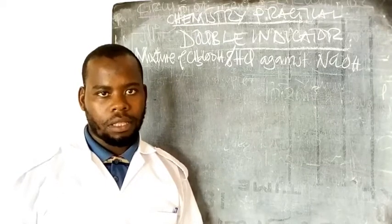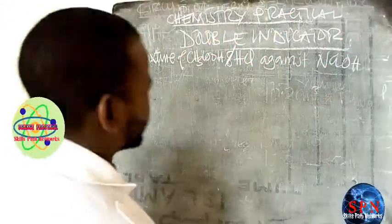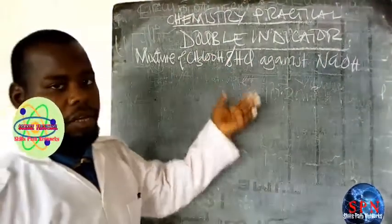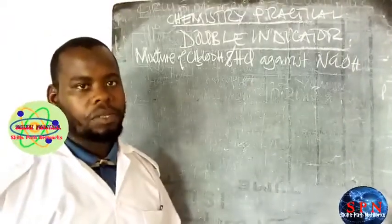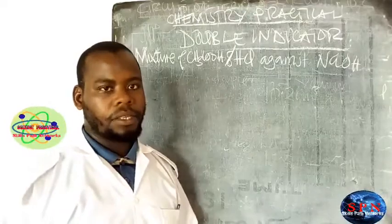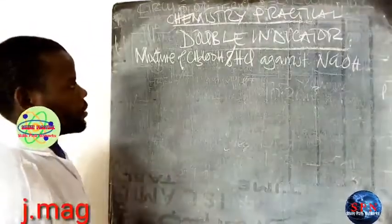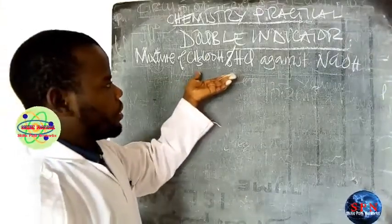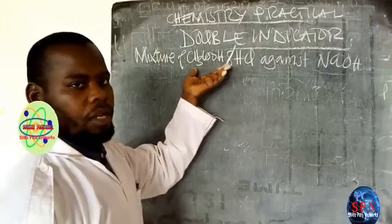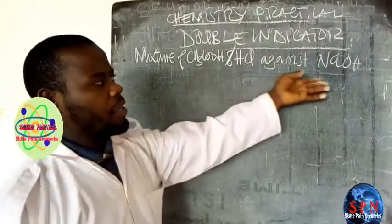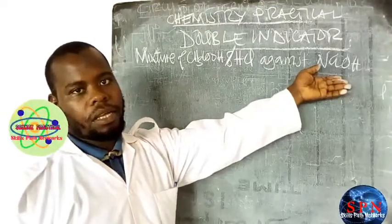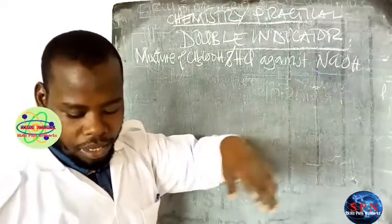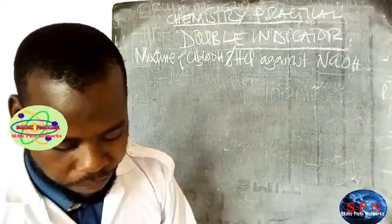We have a mixture of acids — acetic acid and hydrochloric acid — and we are going to titrate it with sodium hydroxide. This is another double indicator titration. The mixture will be in a conical flask and the sodium hydroxide will be in a burette.